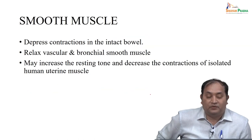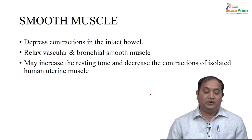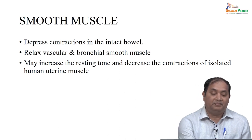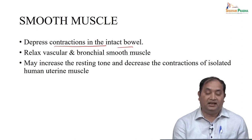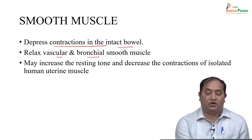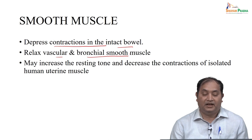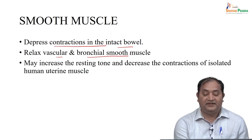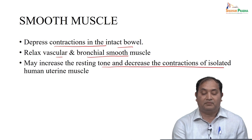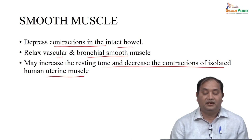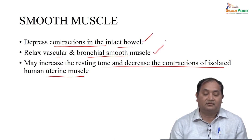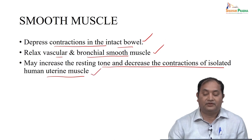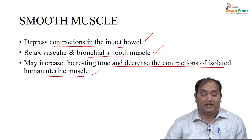Third, the effect on smooth muscle: local anesthetics depress the contraction of intact bowel, relax vascular and bronchial smooth muscle in the respiratory tract, or may increase the resting tone and decrease contraction of isolated human uterine muscle. So you have to consider the effect on GIT smooth muscle, respiratory tract, and uterine muscles.